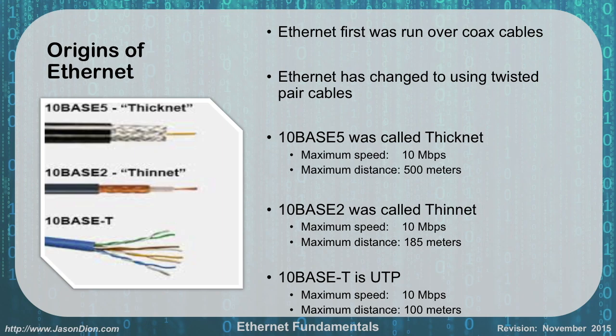Ethernet was originally run over coaxial cables. We had 10Base5 and 10Base2, called thicknet and thinnet. Thicknet was a thicker cable that could go longer distances — 10Base5, with the 5 standing for 500 meters, at a maximum speed of 10 megabits per second. Thinnet was thinner and couldn't go nearly as far — 10Base2, the 2 for about 200 meters, though in reality you could get about 185 meters. Again, 10 megabits per second.